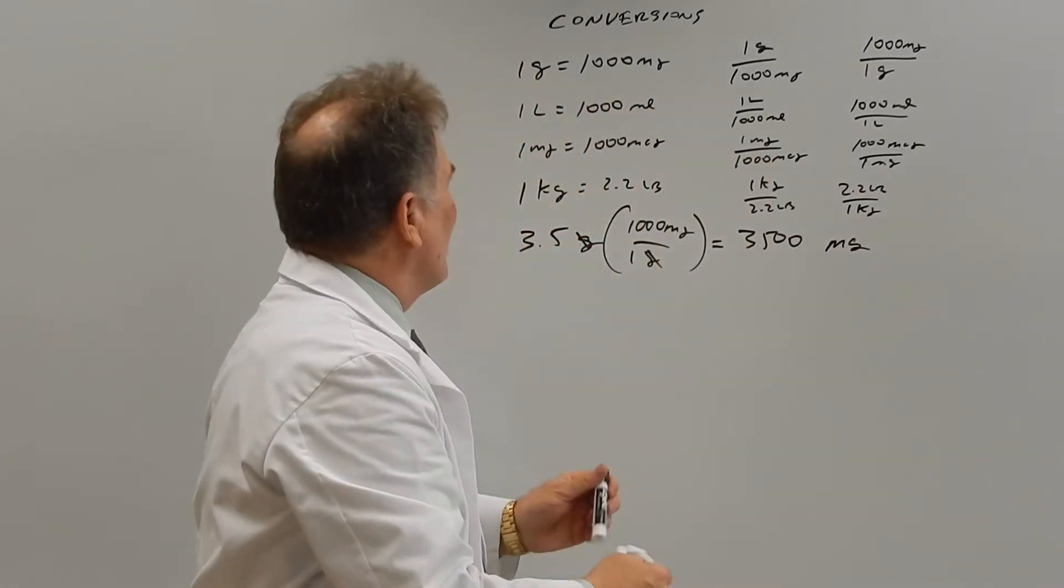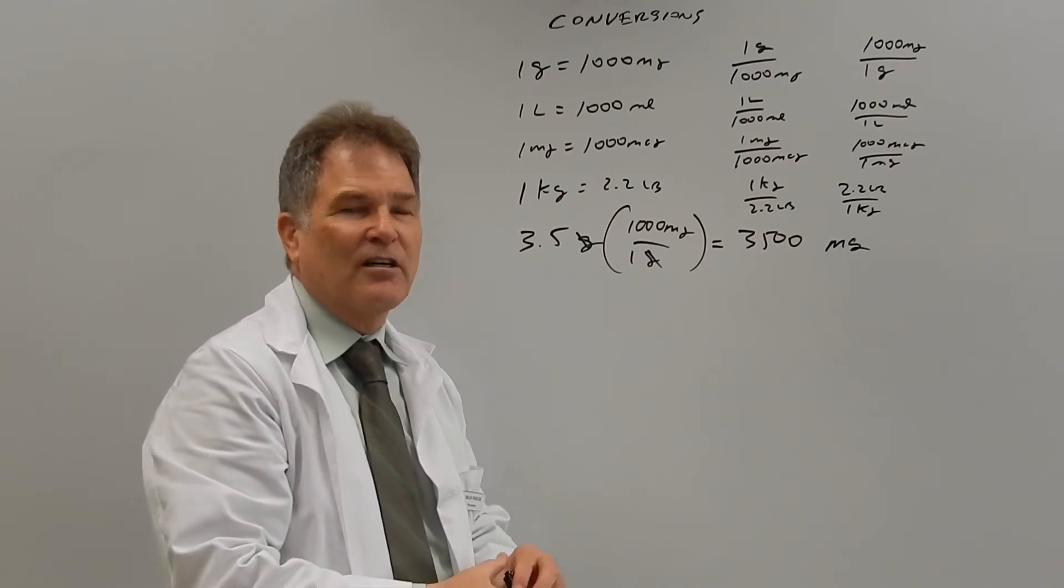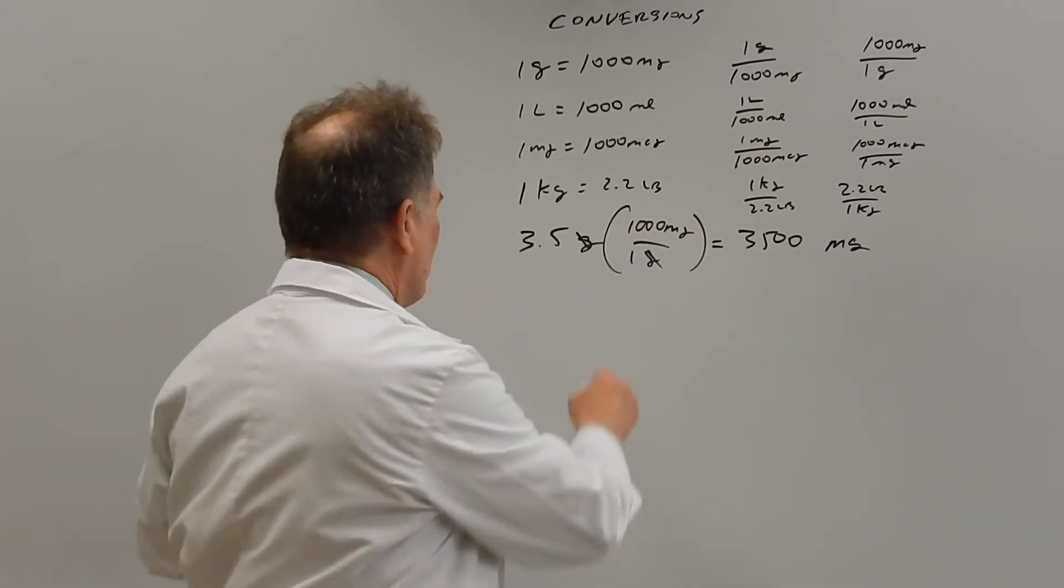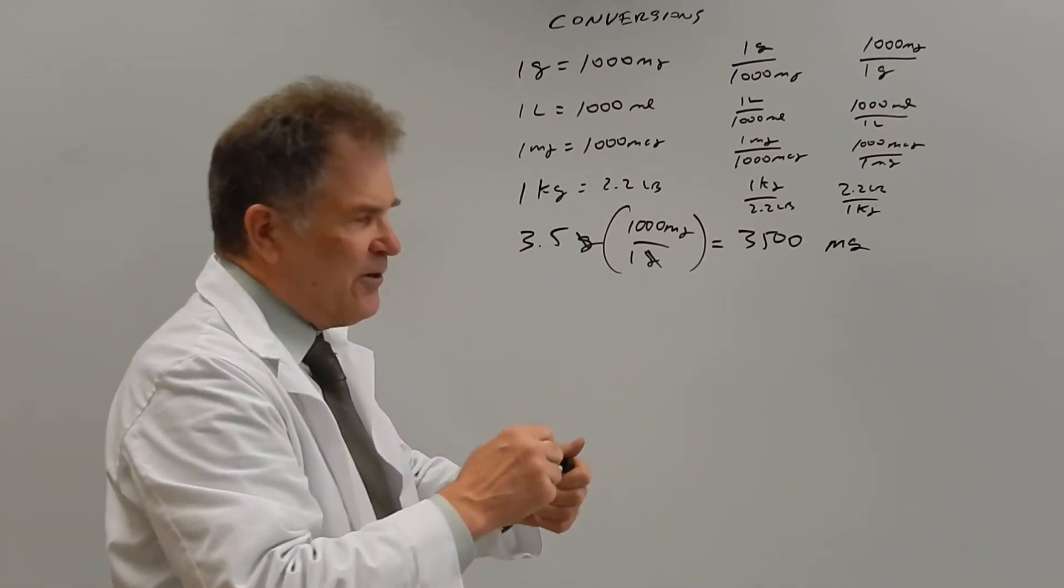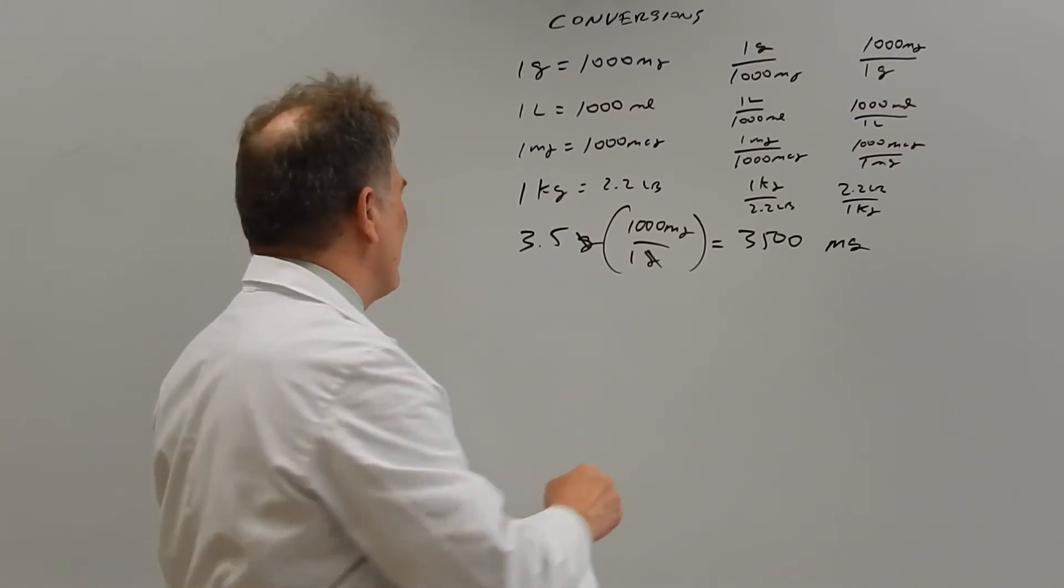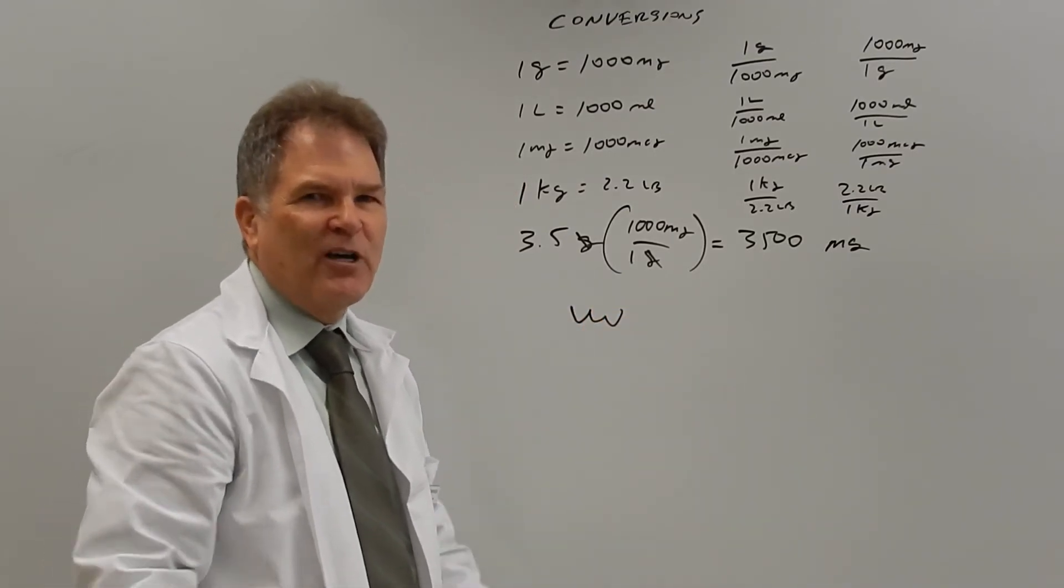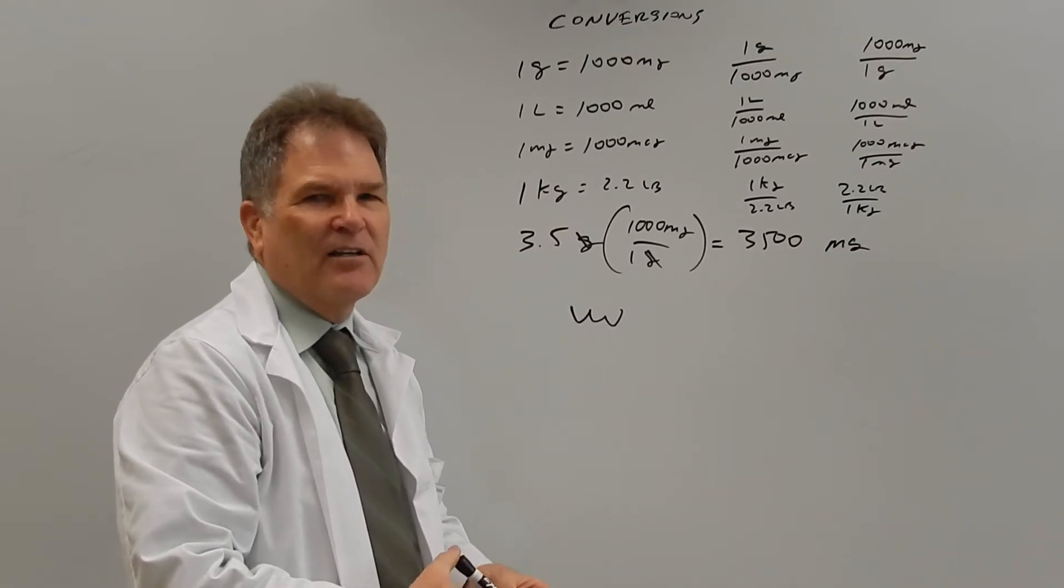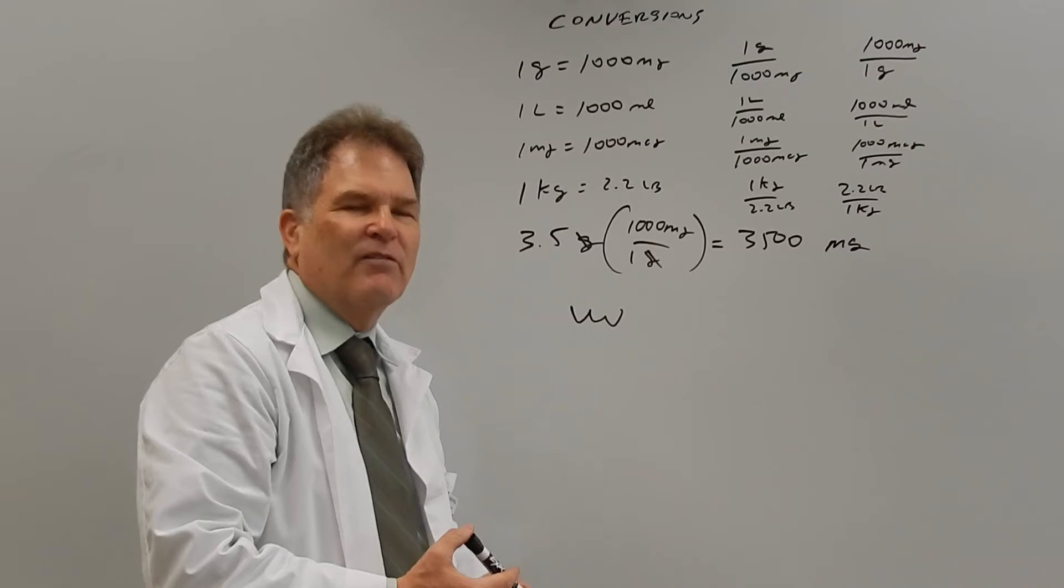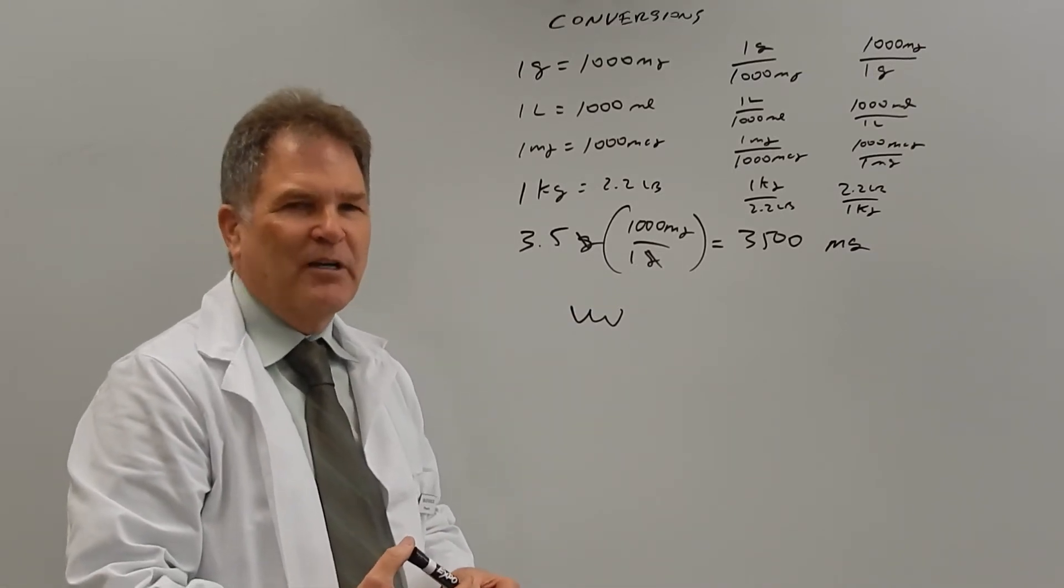Pretty simple. Now, I've seen a lot of books say that when you convert between the metric system, if you're going from bigger to smaller or smaller to bigger, you move the decimal point three places one way or the other. That to me is a very dangerous method, and when I've taught this class, the students who have insisted on doing that invariably move it the wrong place.